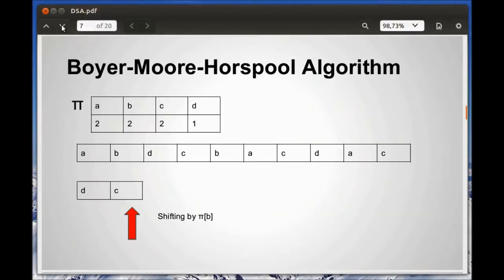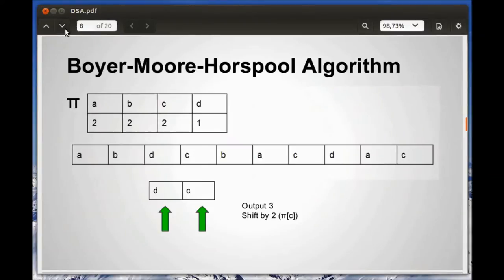We start by comparing C with B, which is a mismatch, so we shift the pattern by π(B), which is 2. We now check C and C, which is a match, move to D and D, and also find a match. Therefore, we output 3 and shift the pattern by 2.